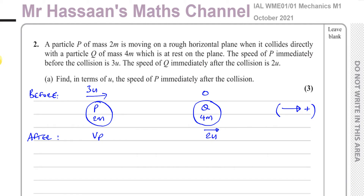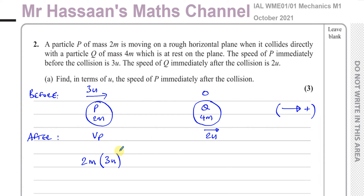I'll take the right direction as positive. It doesn't matter which side you draw P and Q — that's why in part (b) you have to be careful about how you answer. There are two methods we could use for this. The normal method most people use says the total momentum before the collision equals the total momentum after: mass times velocity, so 2m times 3u for P, plus 4m times zero for Q.